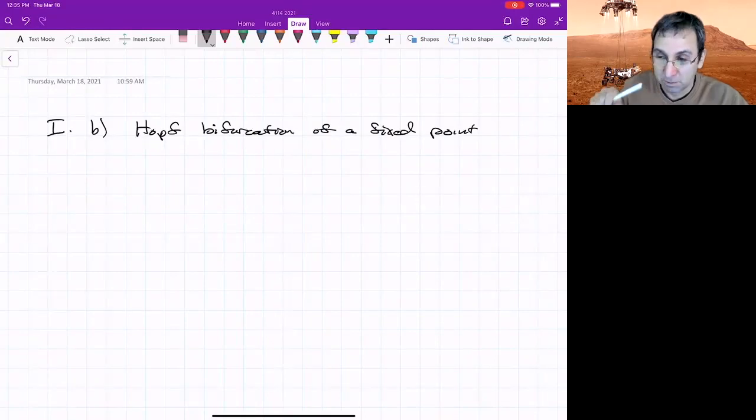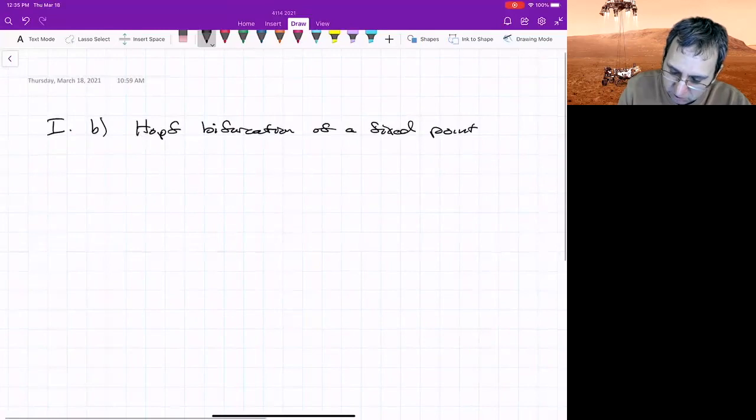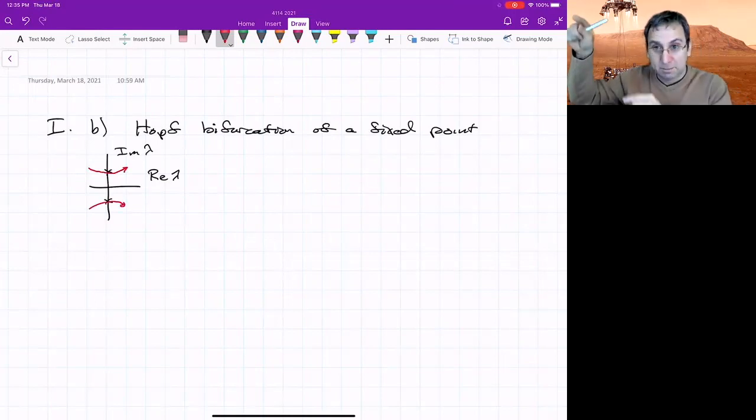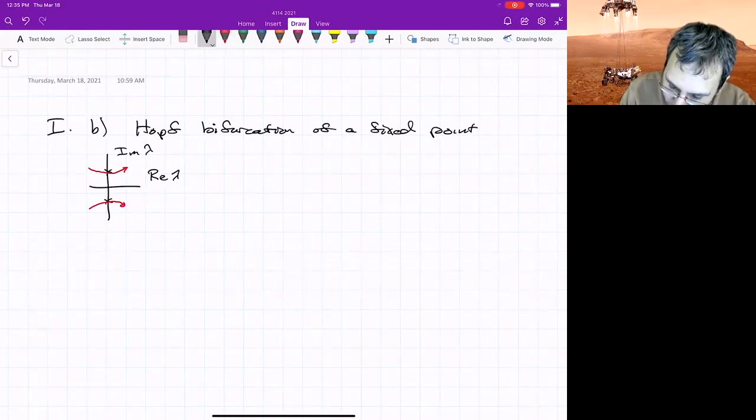Instead of one of the eigenvalues of the two eigenvalues going to zero, in this case, the eigenvalues cross the imaginary axis. So if we look at a fixed point and we're plotting the real and imaginary parts, as you vary a parameter, and you could be crossing one way or the other, but if they cross symmetrically, right, we have to have complex conjugate pair. At this point, we've got i omega and negative i omega.